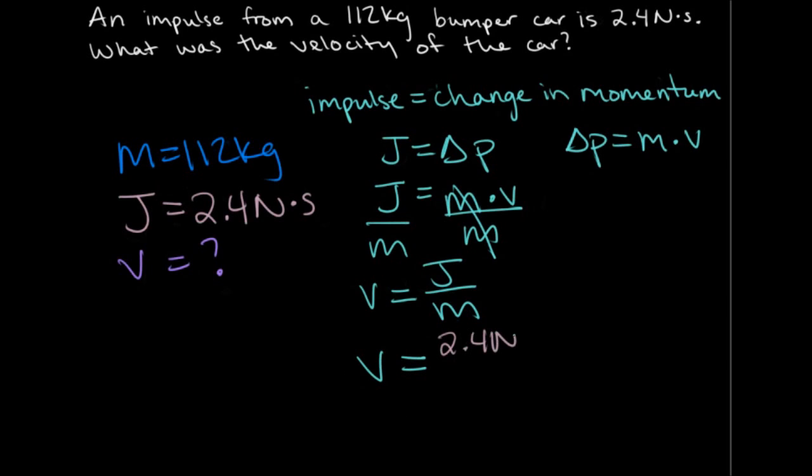2.4 newtons times seconds divided by 112 kilograms equals 0.021. And that's a velocity, so it'll be meters per second.